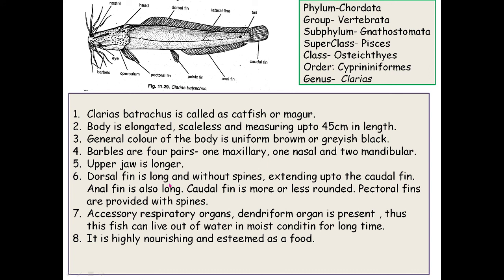The upper jaw is longer. The dorsal fin is long and without spine, extending up to the caudal fin. The anal fin is also long and the caudal fin is more or less rounded. Pectoral fins have spines. An accessory respiratory dendriform organ is present, allowing the fish to live out of water in moist conditions for up to 24 hours. It is highly nourishing and used as a food fish.